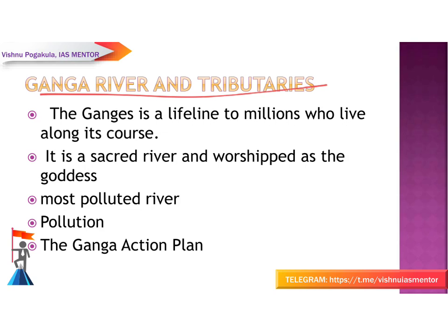First let's see about the Ganga river and its tributaries. The Ganges, or the Ganga river, is a trans-boundary river of Asia — it flows through two countries, India and Bangladesh. It originates in the Gangotri glacier of the western Himalayas in Uttarakhand, India, flows through the Gangetic plain, and empties into the Bay of Bengal. The Ganges is a lifeline to millions of lives along its course, and it is a sacred river worshipped as a goddess in Hinduism.